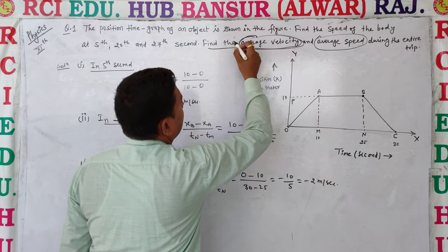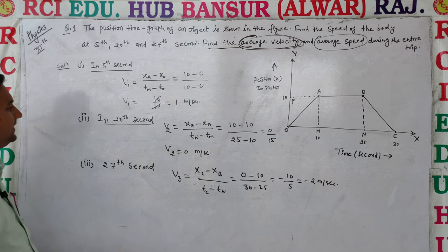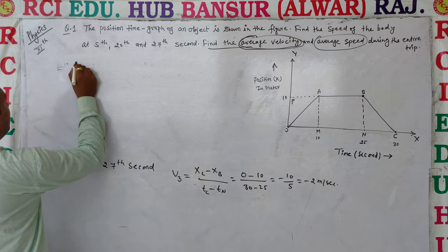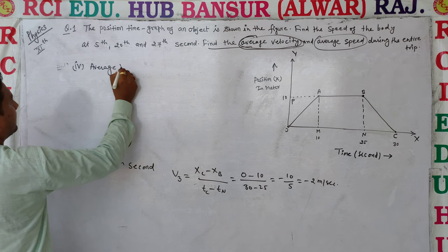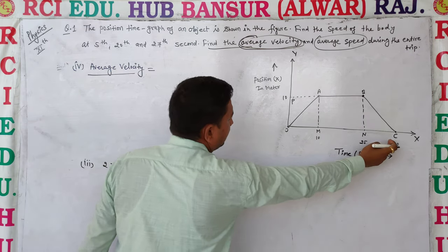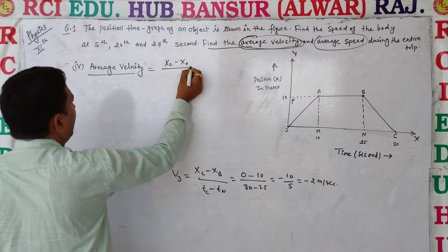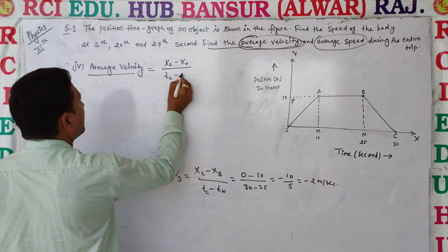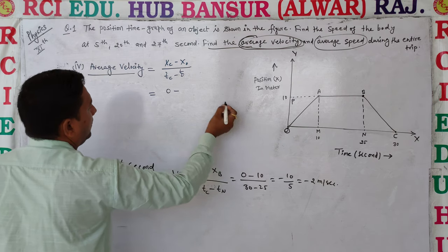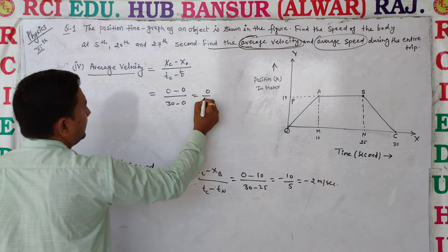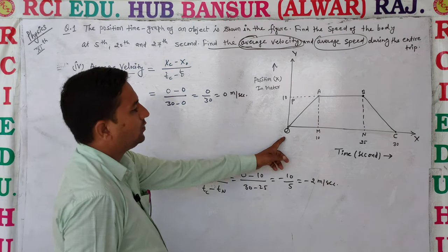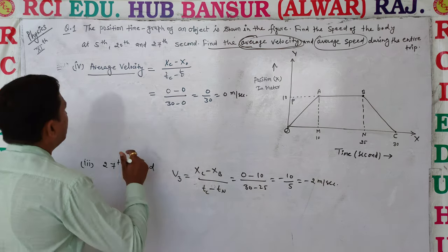Next, average velocity and average speed. Average velocity equals total displacement (x_c - x_0) divided by total time (t_c - t_0). Here x_c = 0 and x_0 = 0, and t_c = 30 seconds, t_0 = 0. So average velocity = 0 / 30 = 0 meter per second. For the entire trip from O to A to B to C, the average velocity is 0.